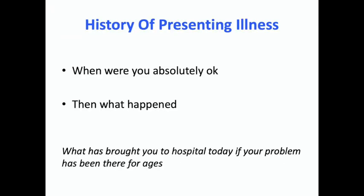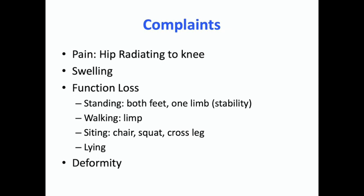For history of presenting illness, ask the patient: when were you absolutely okay? Take him back to a timeline where he was fine so he can tell you the right duration of his illness. After that, ask what happened then. Some patients will say they have been ill their whole life — you may need to ask what has brought them to the hospital today. You have to modify your questioning; sometimes it needs to be straightforward, and sometimes you need to encourage the patient to speak out.